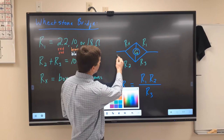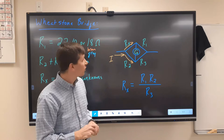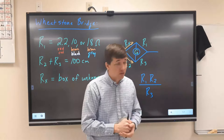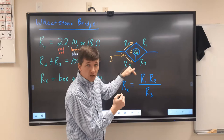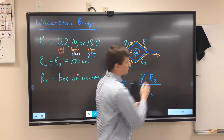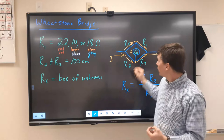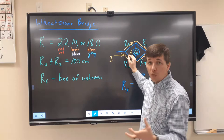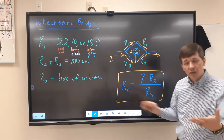As current flows into this circuit, it can split and take either path — it can pass through Rx or through R2. It then comes to this junction where we have our galvanometer. What we want is a balanced circuit so that no current flows through the galvanometer. Whatever current went through R2 continues through R3, and whatever current flowed through Rx flows through R1. We'll be moving this connection back and forth to find the point where no current flows through the galvanometer.